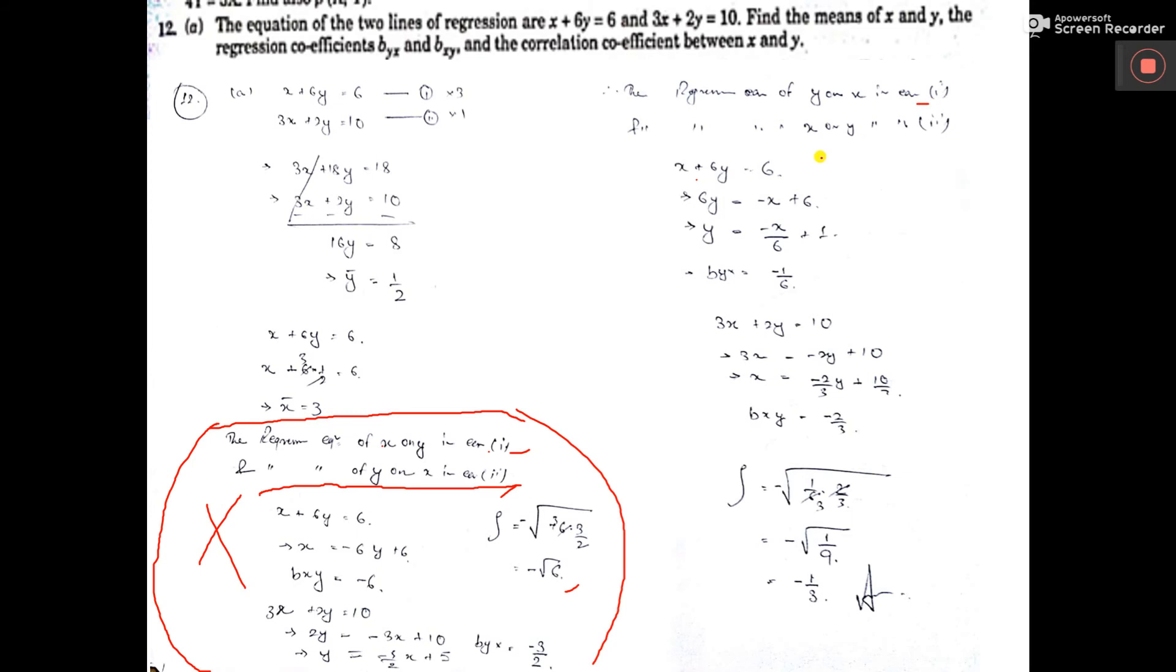So, here, from equation 1, see this one, we are finding y from here. Start with y, end with x. So, this minus 1 by x will be byx. Similarly, equation 2, you find x as subject. This is bxy. Start with x, end with y. So, bxy.